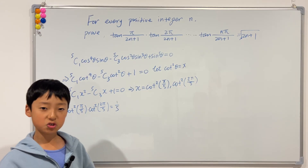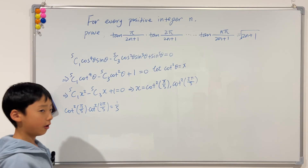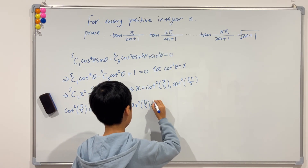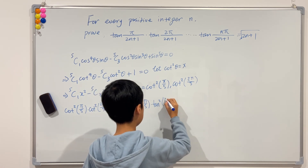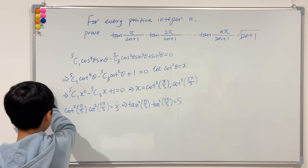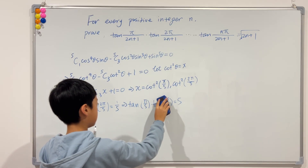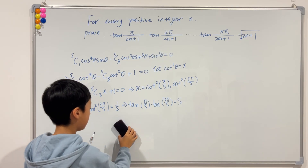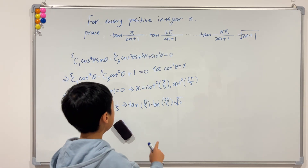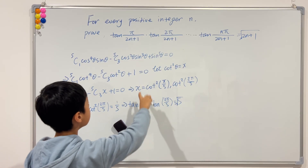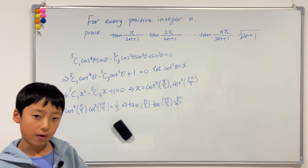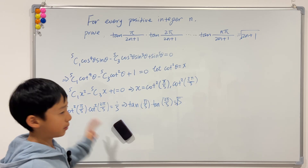Cotangent and tangent are just one reciprocal away. So if we take the reciprocal on both sides, we get tangent squared of pi over 5 times tangent squared of 2 pi over 5 equals 5. Taking the square root on both sides gives tangent of pi over 5 times tangent of 2 pi over 5 equals square root of 5. We have proved it! Now this gives us inspiration for what to do to solve the real problem — the hard problem. Let's work on our roadmap.